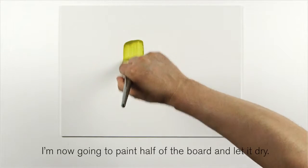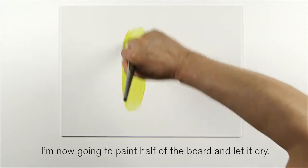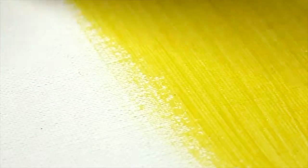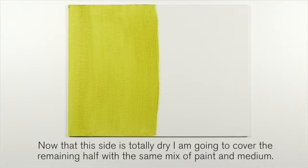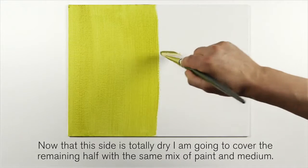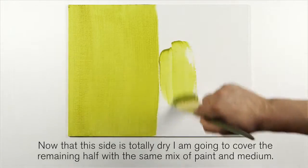I'm now going to paint half of the board and then let it dry. Now that this side is totally dry, I'm going to cover the remaining half with the same mix of paint and medium.